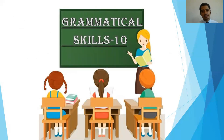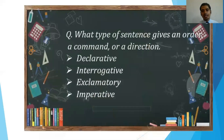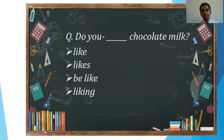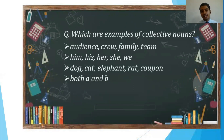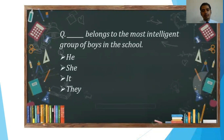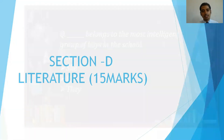The grammatical section will carry 10 marks. Questions will be given like: 'What type of sentence gives an order, a command or a direction?' — with options provided. Or: 'Do you dash chocolate milk?' — with options like 'like,' 'be like,' 'be liking' — the correct option is 'Do you like chocolate milk?' This is how the MCQs from the grammar section are going to be given — a question followed by four options.